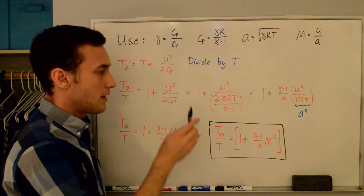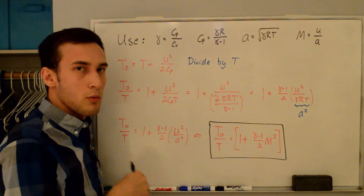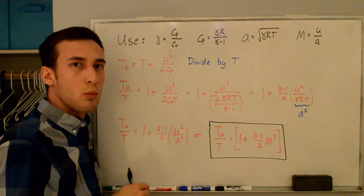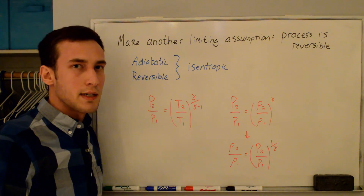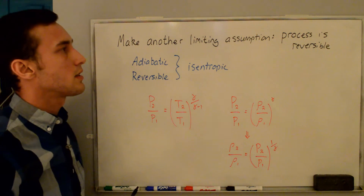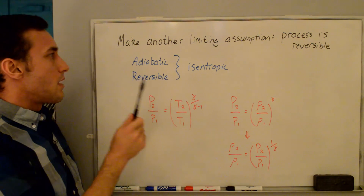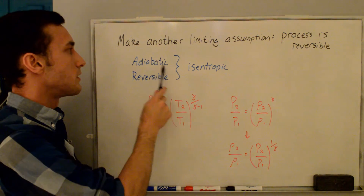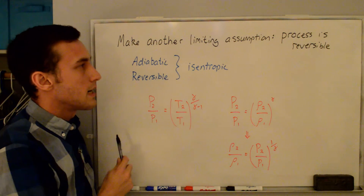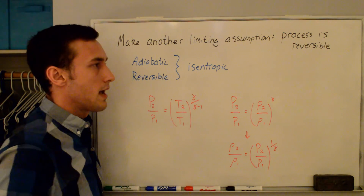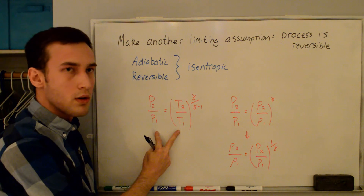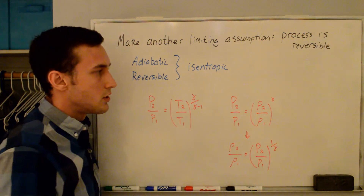Recall that the stagnation temperature is defined as the temperature reached if we bring the flow adiabatically to rest — it does not need to be brought to rest reversibly. Now that we have the expression for stagnation to static temperature, we want to find the stagnation to static pressure and density. We need to make another limiting assumption: that the process is reversible. Combined with adiabatic, this gives us an isentropic process. From the isentropic relations, we have expressions relating pressure-temperature and pressure-density ratios.